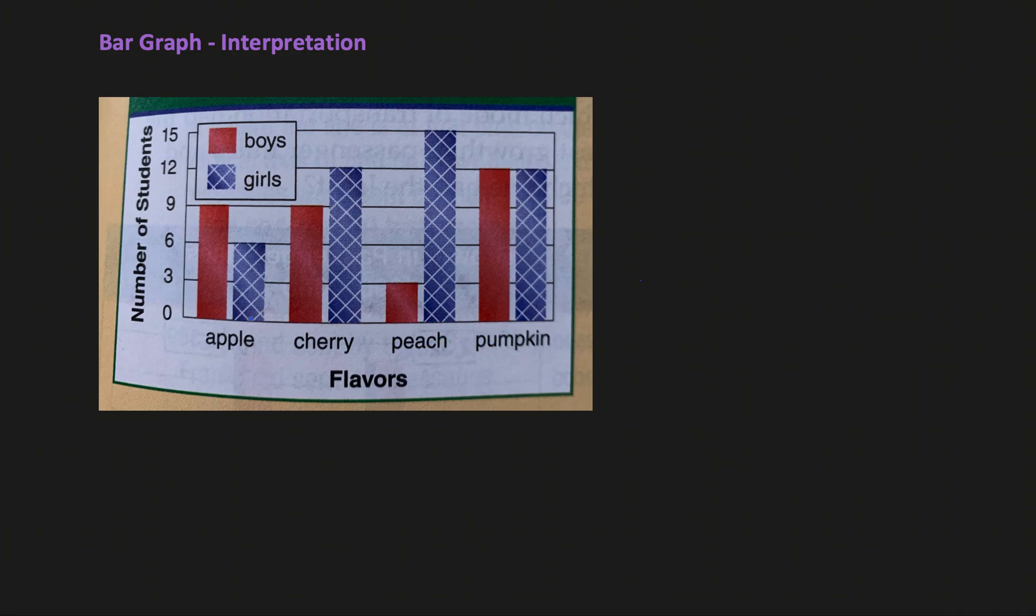In this example, it's comparing pies, different kinds of pies between boys and girls. It could also be used to compare different places or different things, and the bars could be either horizontal or vertical. In this case, it's vertical bars.